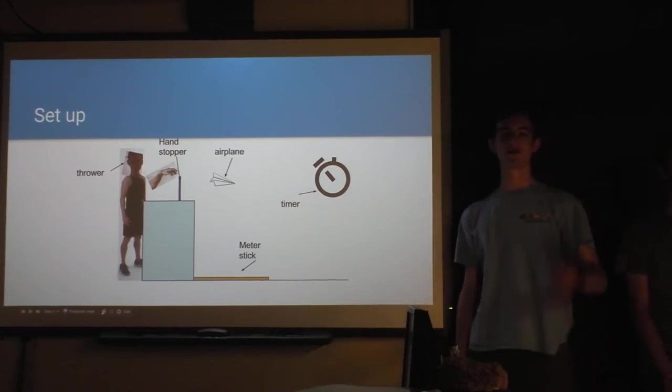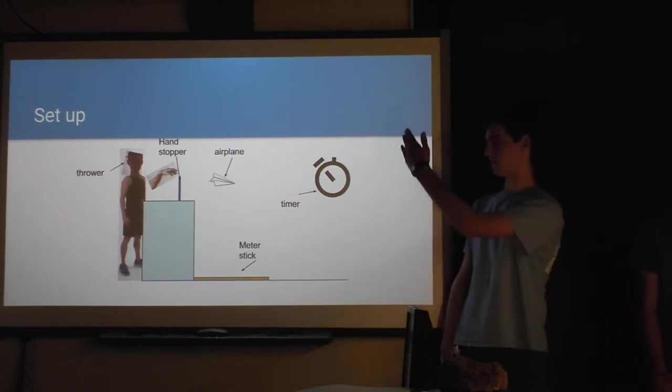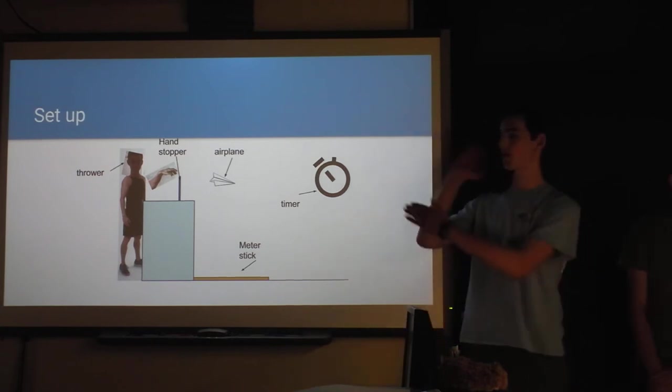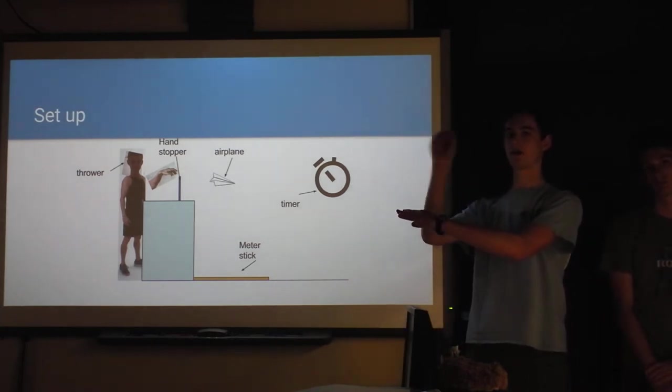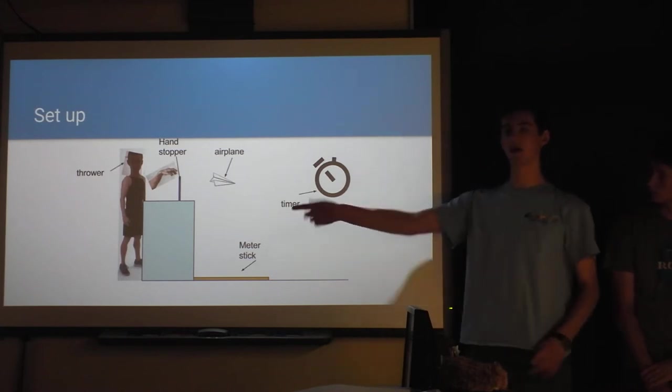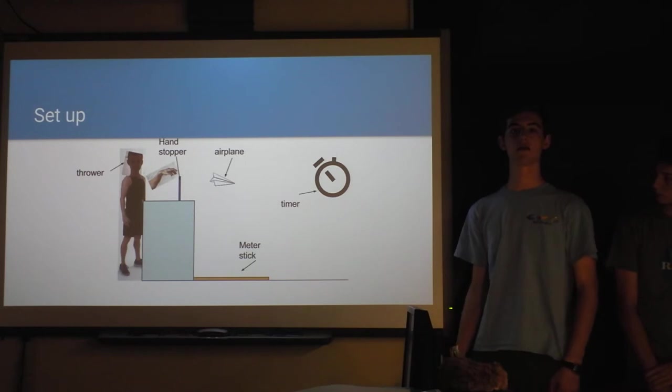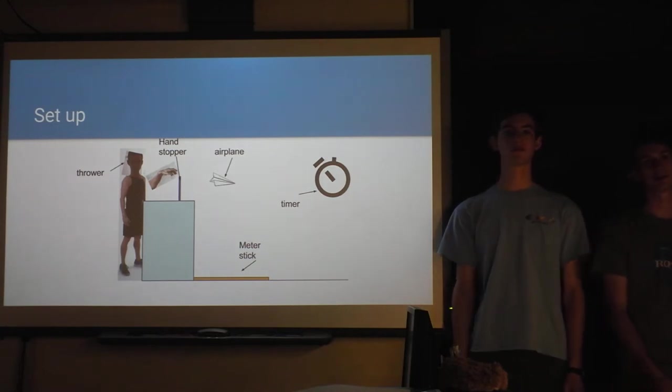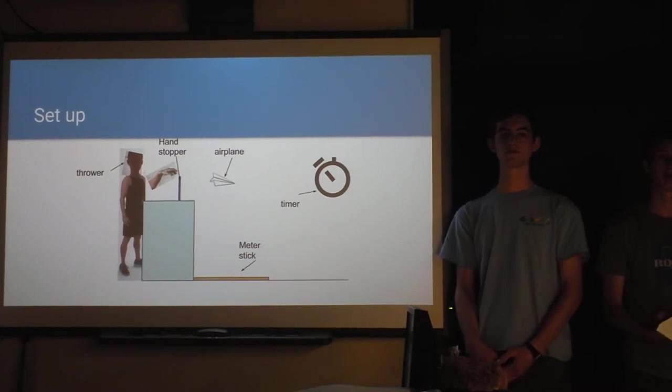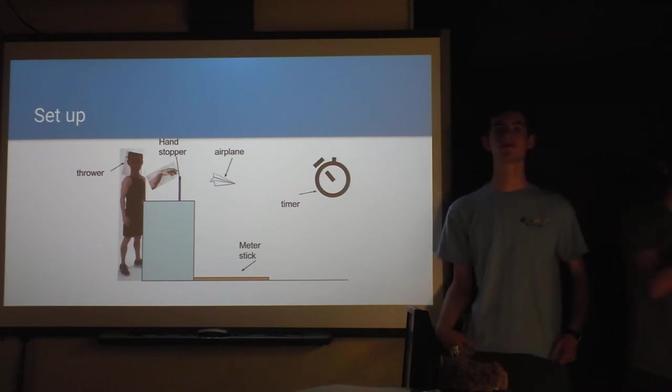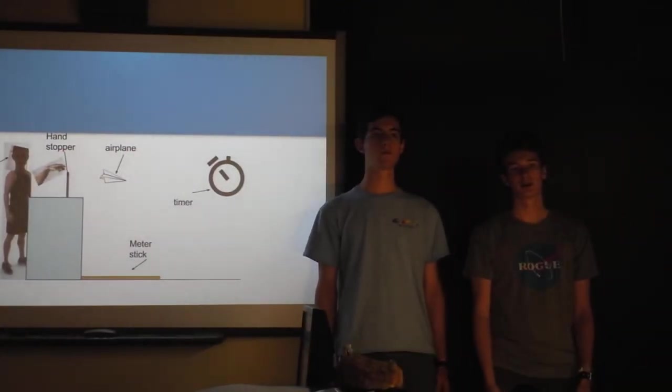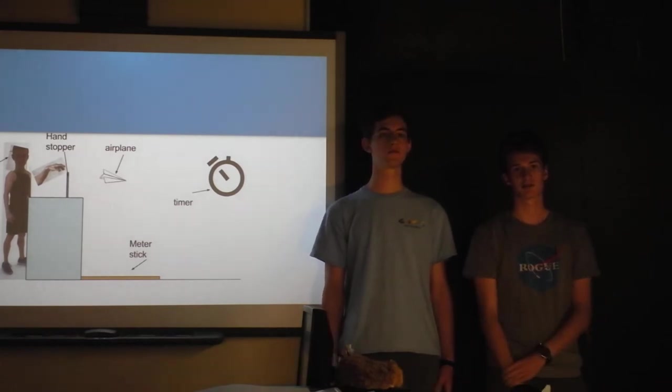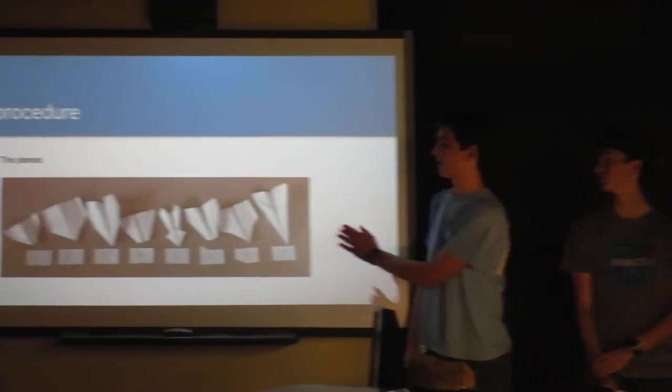So here's our setup. We were just in the back of the room there. We had a carpet square where you could stop your hand and you wouldn't go past it any of the times and you throw the plane. And then we measured the distance and timed the runs. We measured the displacement. That's another thing we should have tried to address. Not all the planes flew straight every time. They would curve. So that's one of the reasons we measured time.